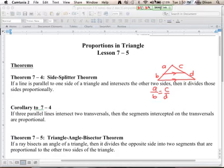Now there's a corollary to that one that says if three parallel lines intersect two transversals, then the segments intercepted on the transversals are proportional. A picture for that one would be if we've got three lines here that are all parallel, and we have a transversal that comes through. So all three of these lines are parallel to each other.